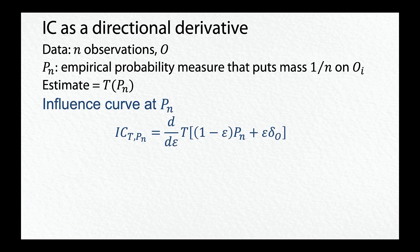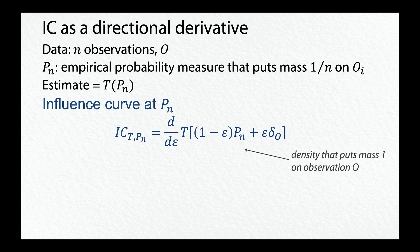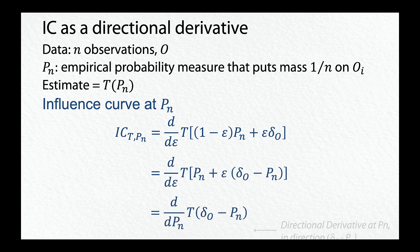The influence curve at p_n is the derivative with respect to epsilon of the mixture where a point mass is shifted to delta o, the density that puts mass 1 on observation o. After collecting terms and applying the chain rule, we find that the influence curve can be written as what's called a directional derivative at p_n in the direction delta o minus p_n. A directional derivative generalizes the familiar partial derivative. While the partial derivative is concerned with how a function changes in response to a change in a single variable with all other variables held fixed, a directional derivative describes how a function changes in response to simultaneous changes in multiple variables. Since we are shifting a point mass to an observation that exists as a vector in a multidimensional space, we are interested in the change in the estimator along this entire vector, not merely along one of its components.